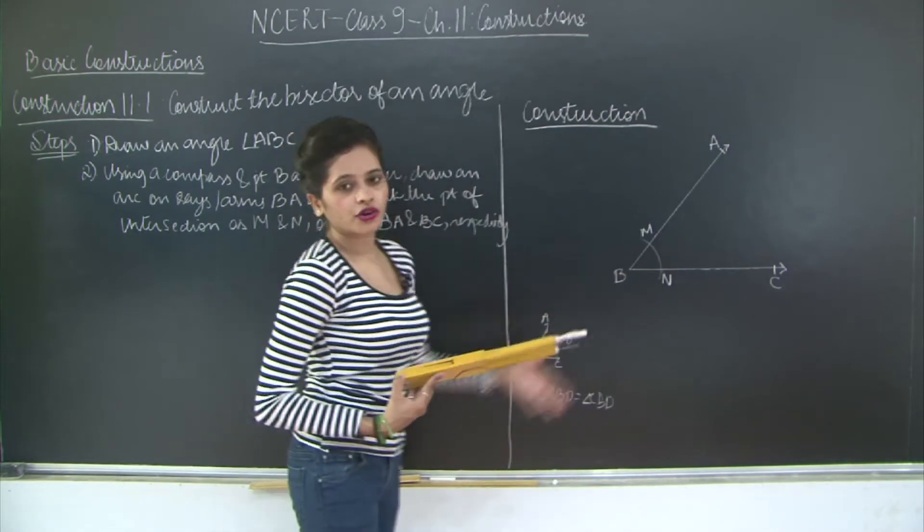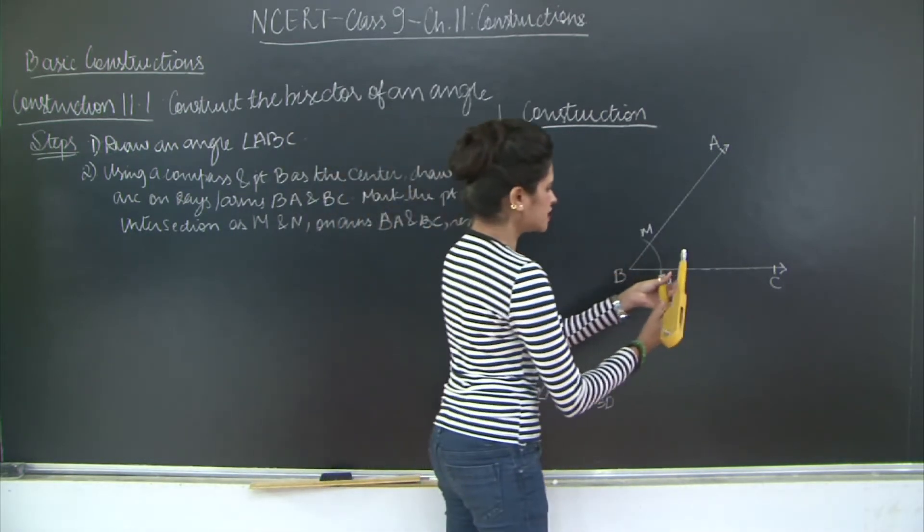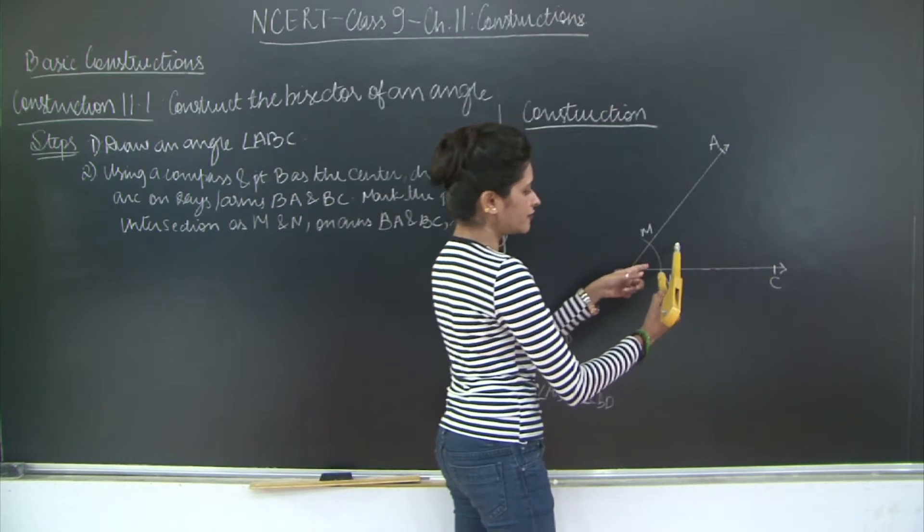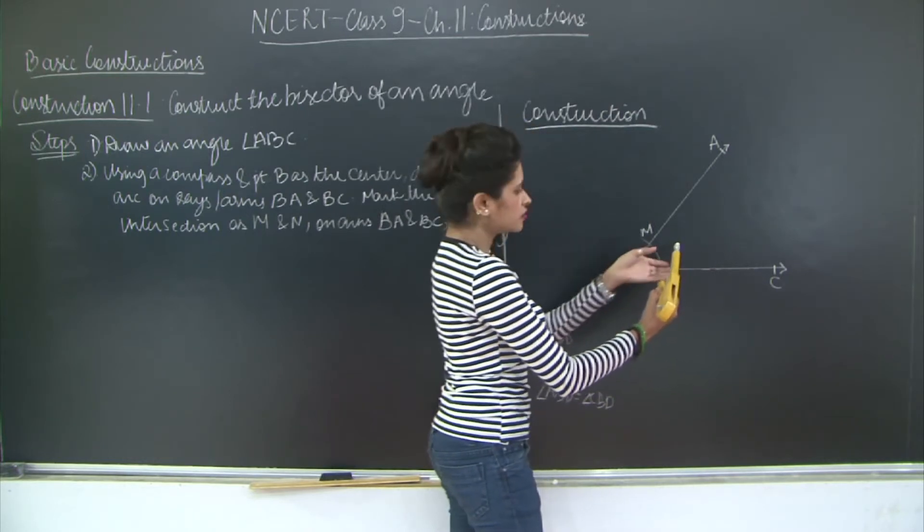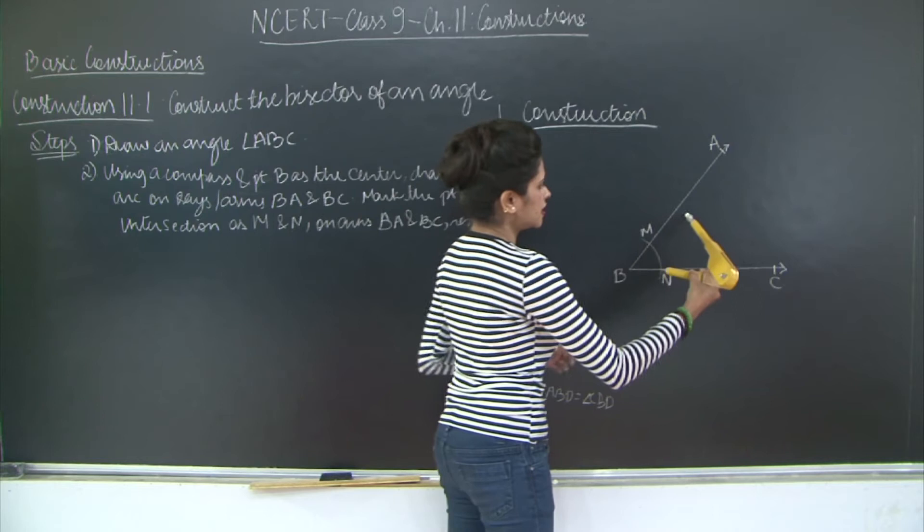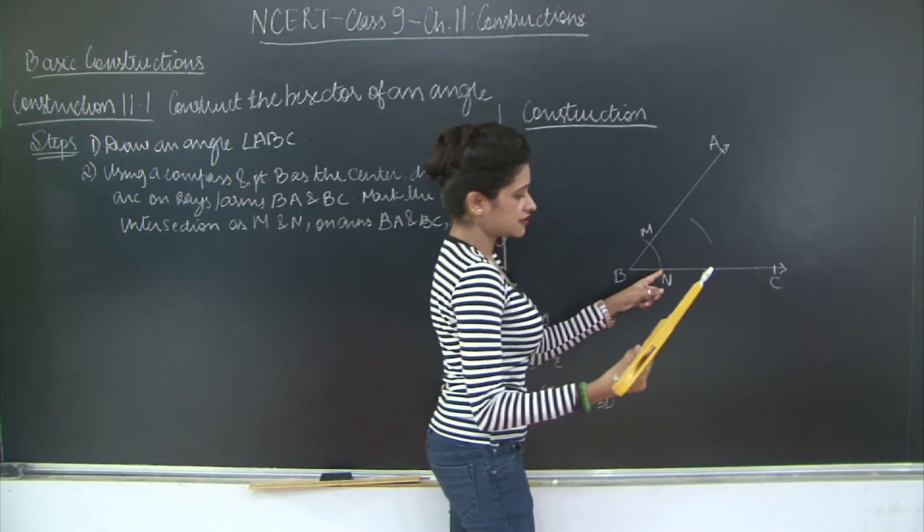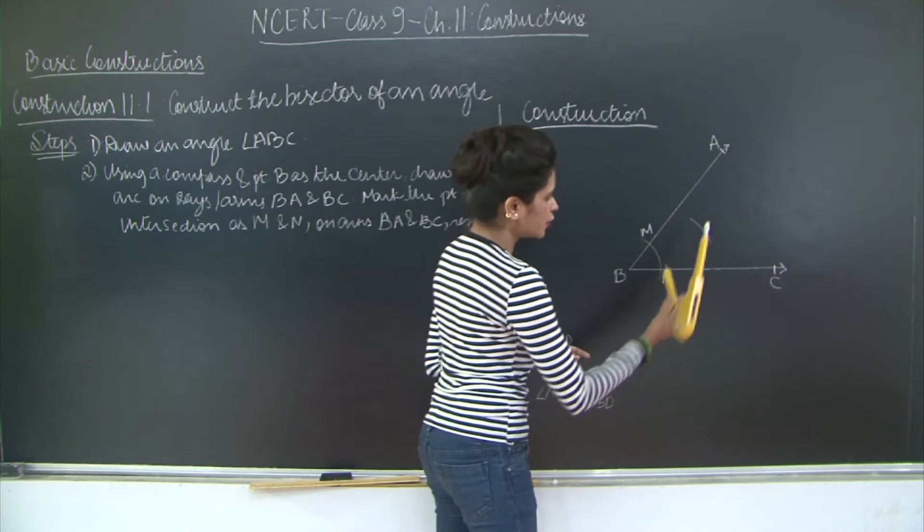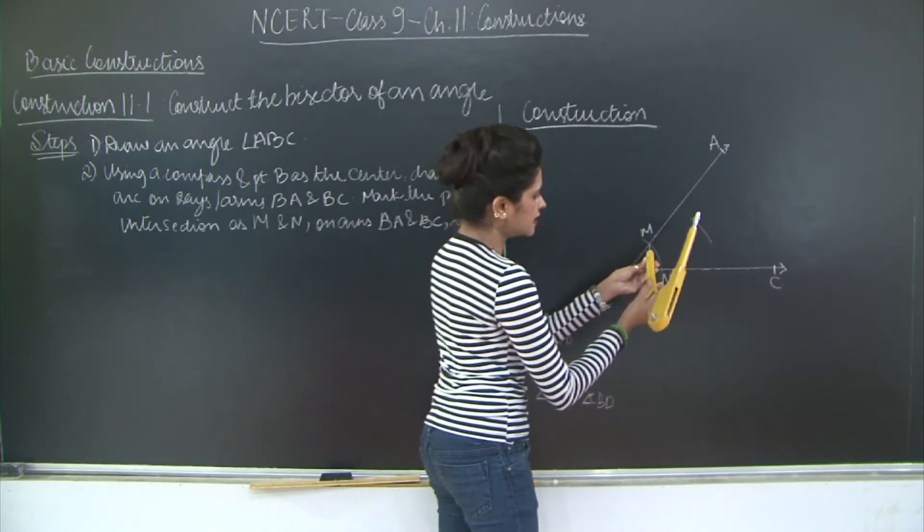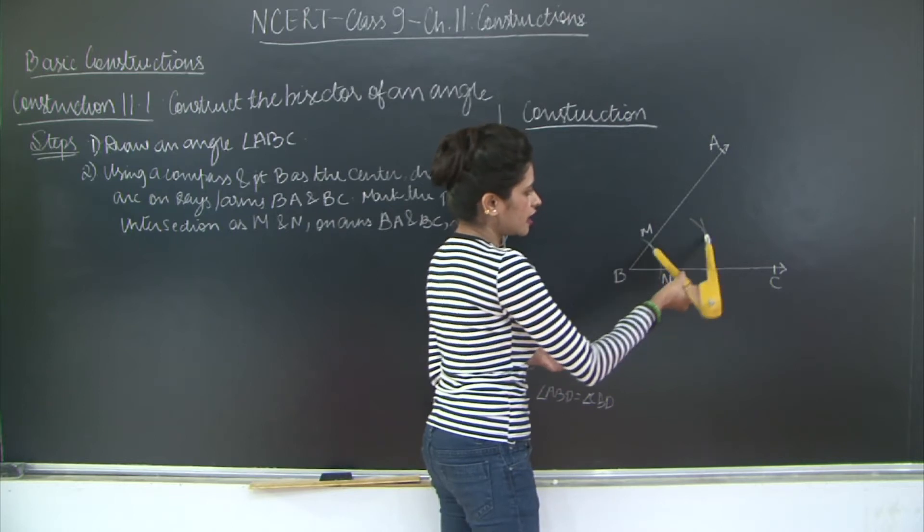Now you have drawn this arc. What you are going to do is you are going to take a length more than half of MN. So I am just taking more than MN. With N as your center here you are going to cut an arc. Again you are going to place this needle on M and you are going to cut an arc here.